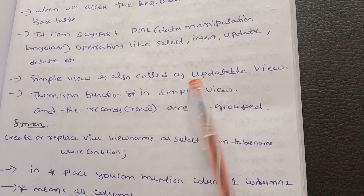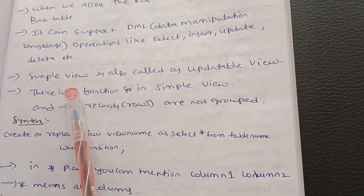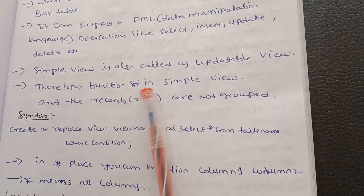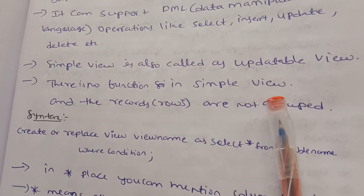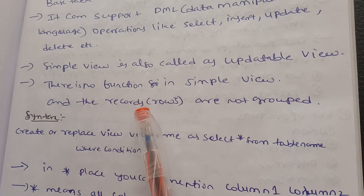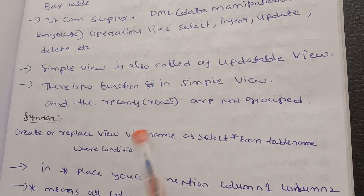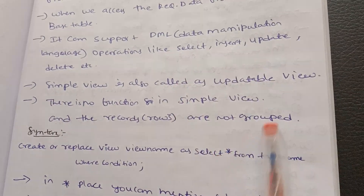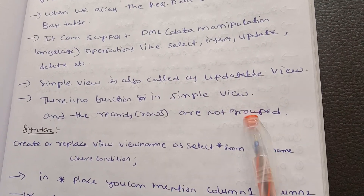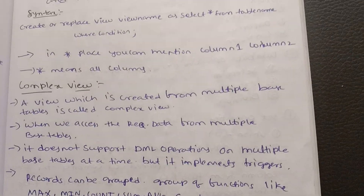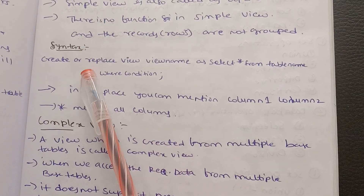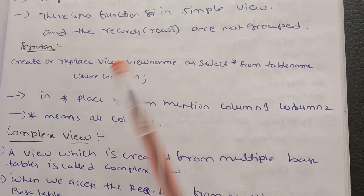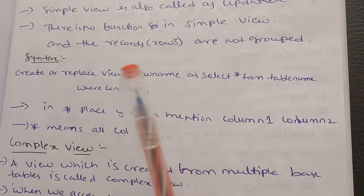We have to create a table with records and rows. Rows are not grouped — it is ungrouped. Let's look at the syntax: CREATE OR REPLACE VIEW view_name AS SELECT * FROM table_name WHERE condition. This is the syntax.